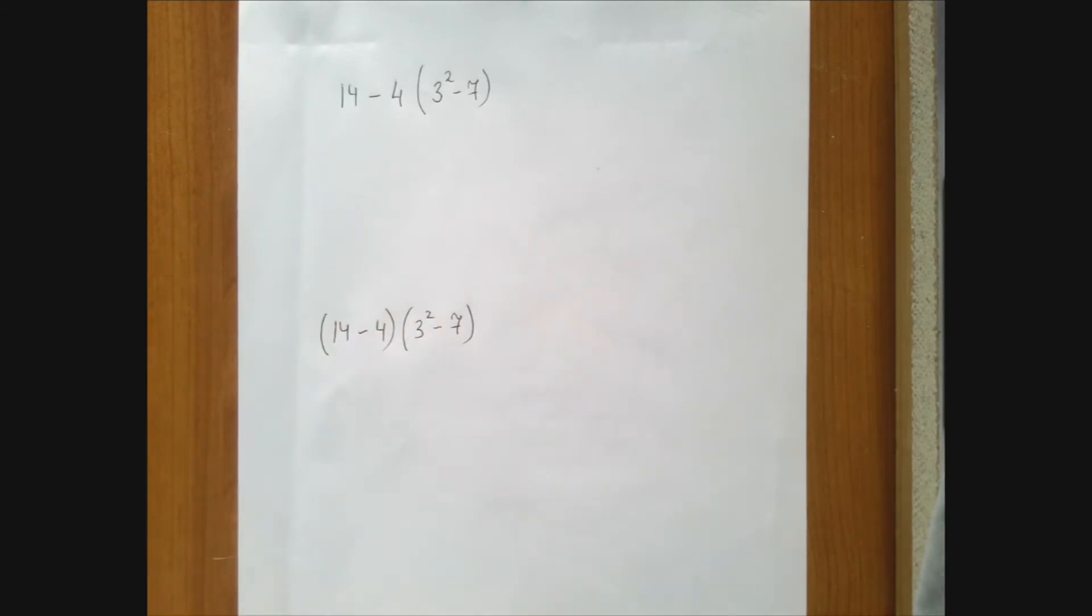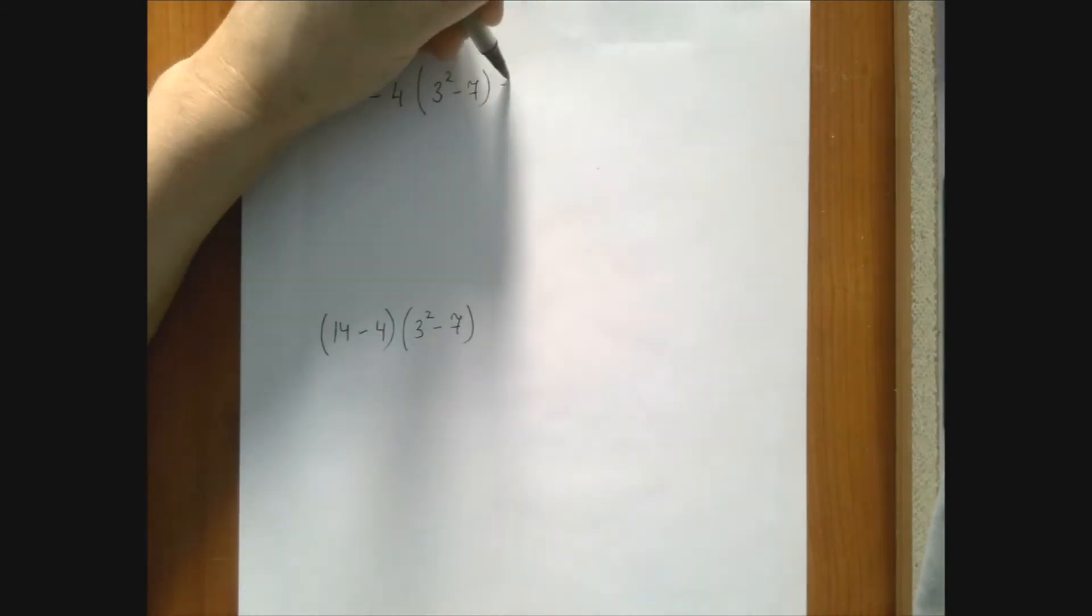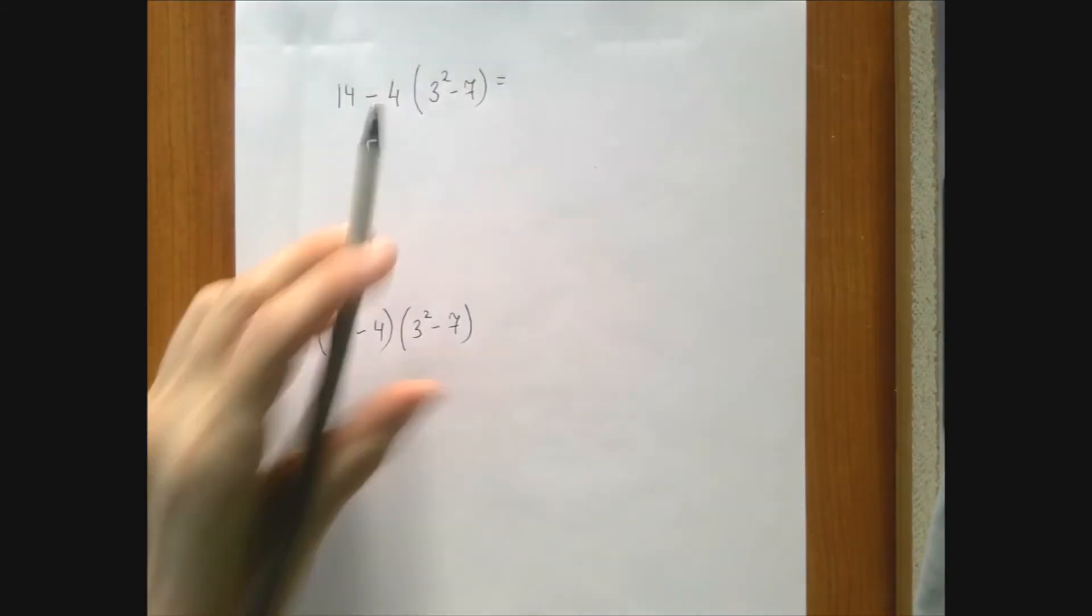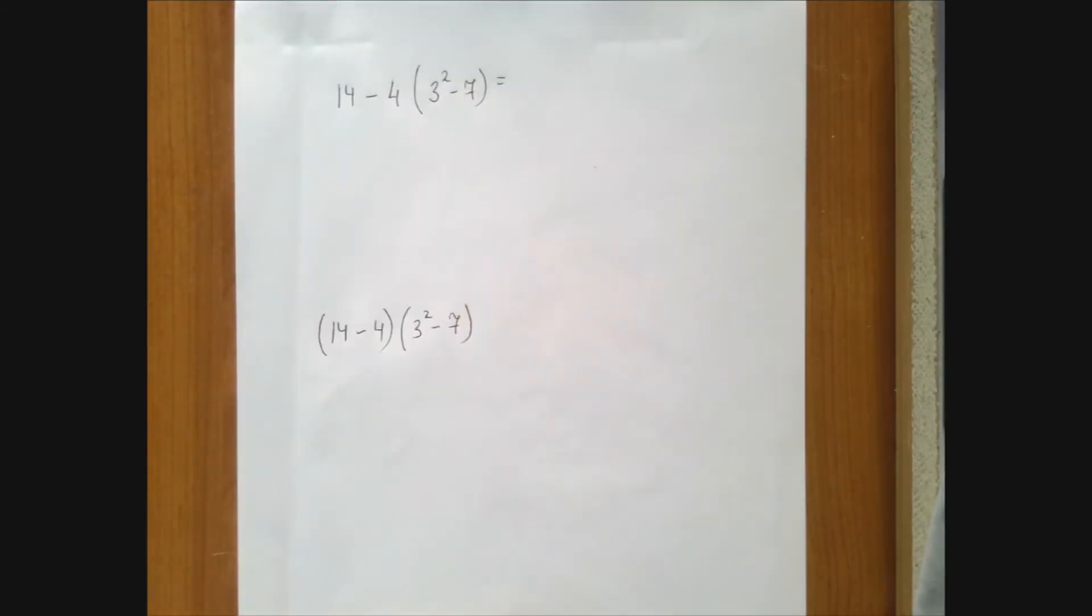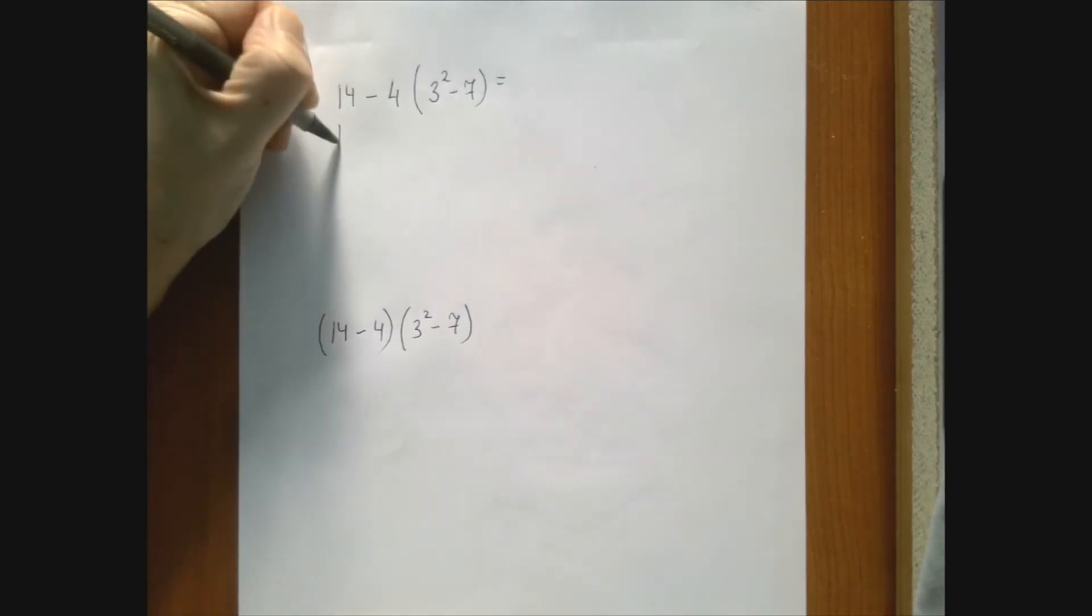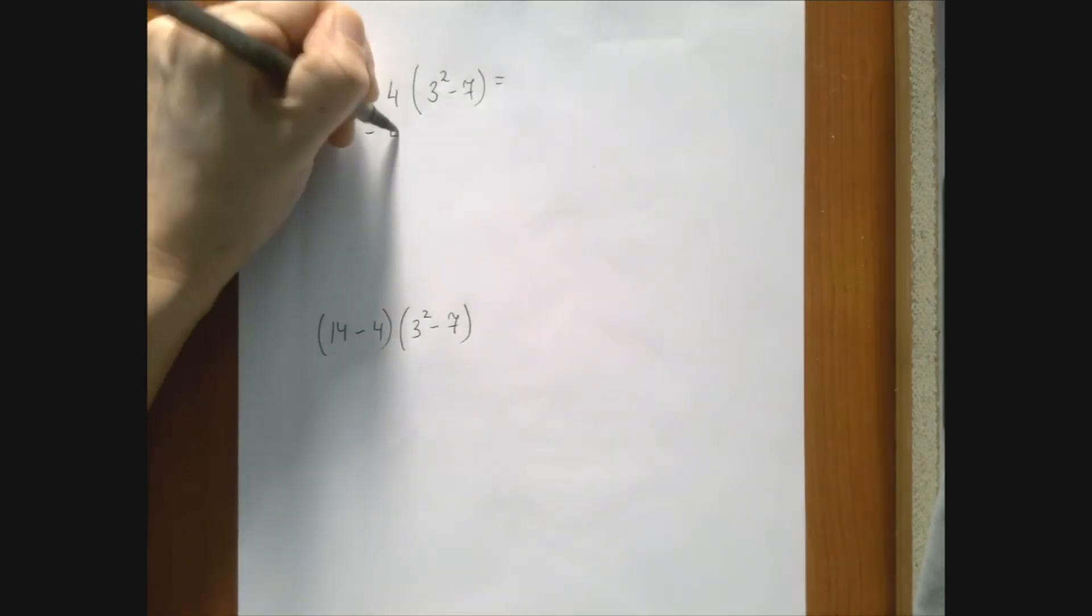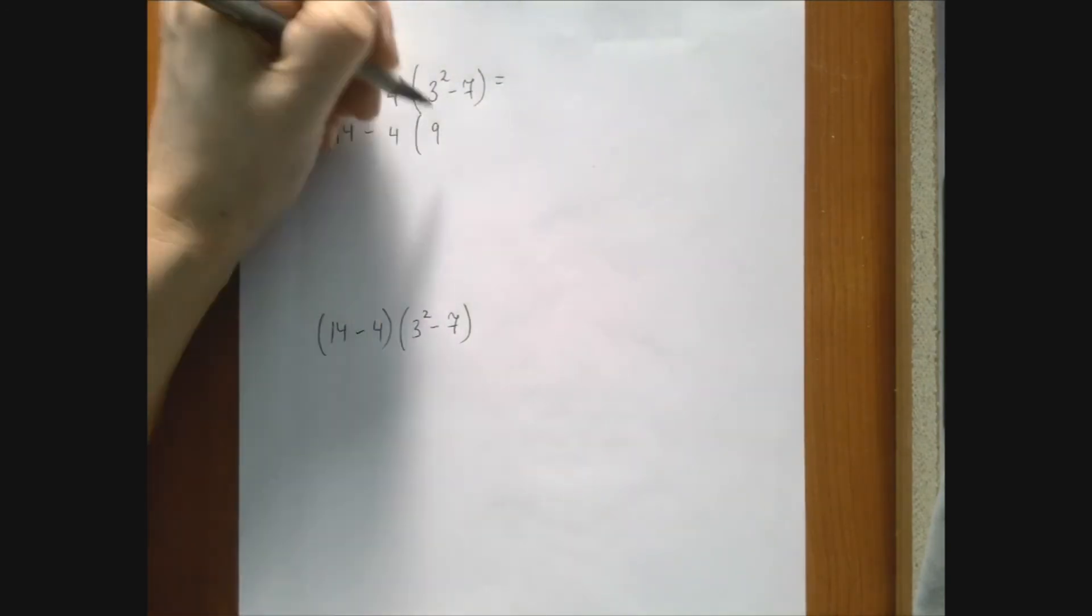We start first with the parenthesis. Inside the parenthesis, we have a mini order of operations problem, where exponentiation is stronger than subtraction, so we start there. So we have 14 minus 4 times, 3 squared is 9.